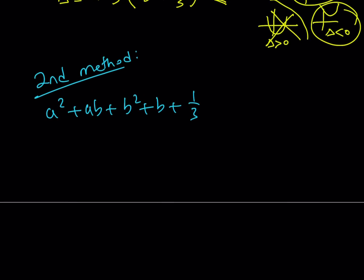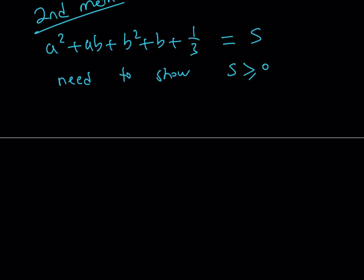I'll complete the square. But this expression needs to equal something, right? So let's go ahead and call it s for sum maybe. Okay, great. So we're trying to prove that, need to show that s is greater than or equal to zero. That's our goal, right?